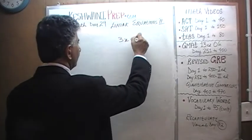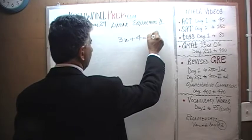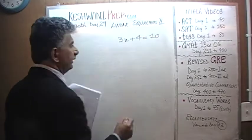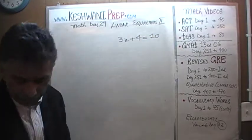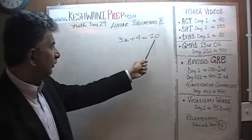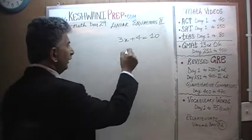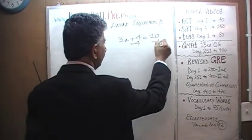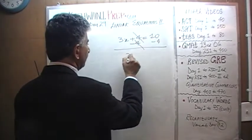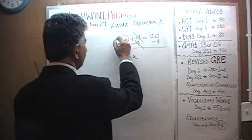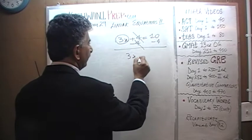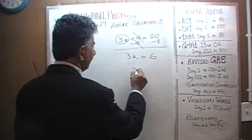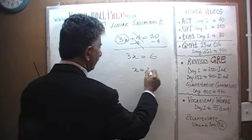3x plus 4 equals 10. Let's bring the 4 to the other side by subtracting 4 from both sides. 4 drops out and 3x remains. 3x equals 10 minus 4 which is 6, and therefore x is equal to 2.